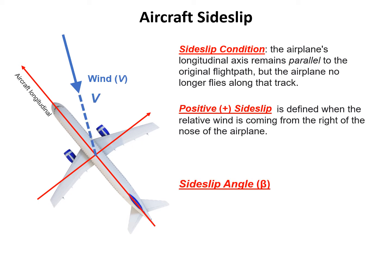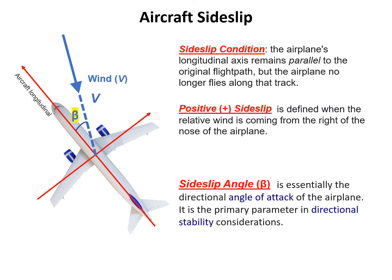The third task is to define the sideslip angle beta. The beta angle is between the aircraft longitudinal axis and the relative wind vector. Sideslip angle is essentially the directional angle of attack of the airplane. It is a primary parameter in directional stability considerations. There's one final quantity which is sideslip velocity. Under a positive sideslip, we will have positive sideslip velocity.